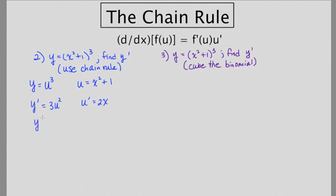So overall, the derivative is going to be 3u squared times 2x. Now, we have to replace what u was in the first place. So that's defined over here. So we're going to write y prime is equal to 3 blank squared times 2x. And in the blank, it's going to go x squared plus 1, because that's what u was defined to be.